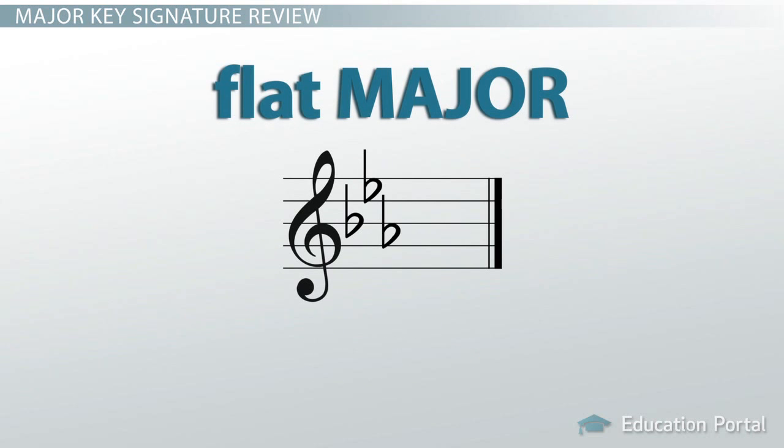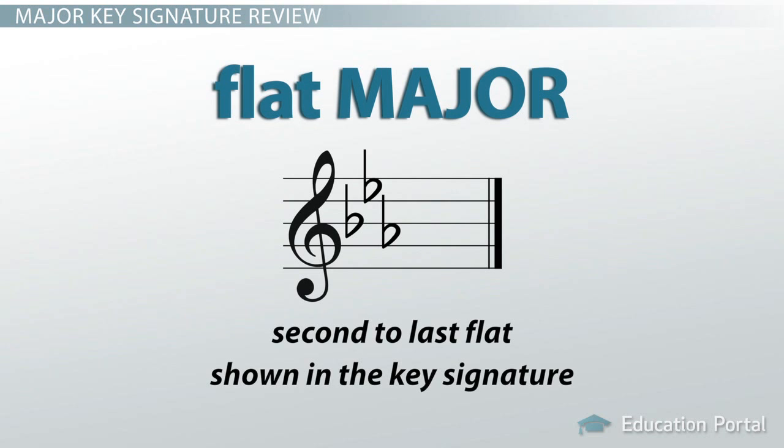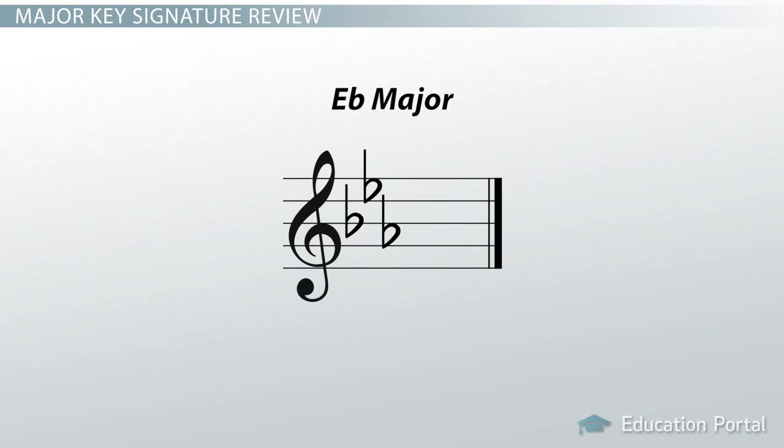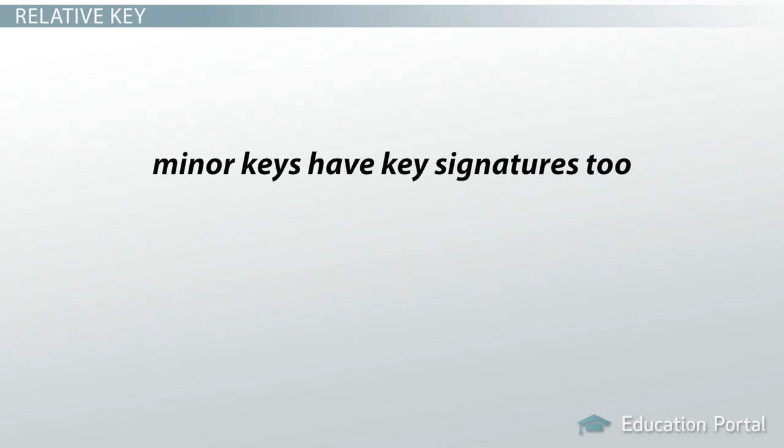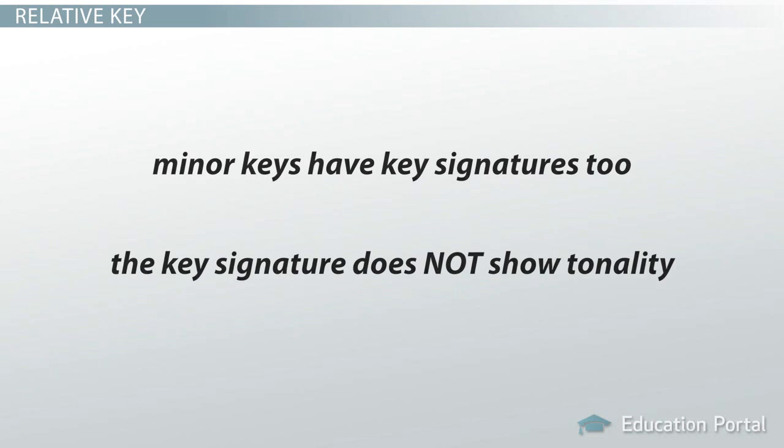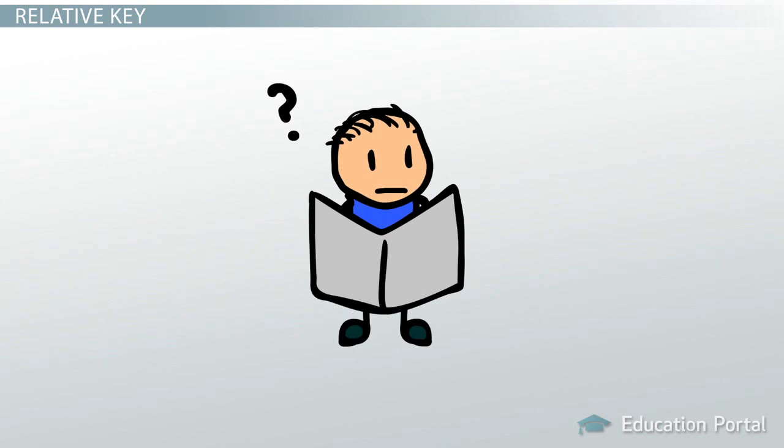And in a flat major key signature like this one, you know that you can find the key by identifying the second to last flat shown. So this example shows E flat major. But since minor keys have key signatures too, and the key signature does not show tonality, we can't just tell by looking at the key signature alone whether the piece is major or minor.